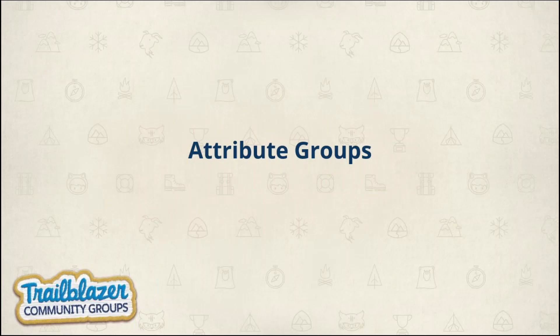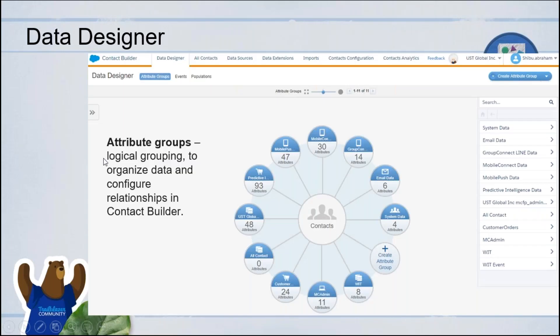The next topic is attribute groups. Attribute groups are in Contact Builder. The first time you see it you might be quite freaked out — it's a diagram with a lot of data points. But don't worry, it's quite simple once you get to know it. It's a logical grouping of your data and how they relate to each other and the contact model. The contact is the center of this model and everything else connects to the contact. You can define a group, add one or more data extensions in a group, and show how they relate to the contact. You can use these relationships in other tools like journeys — except for Email Studio.